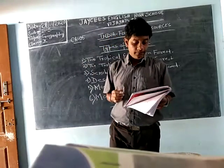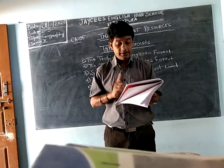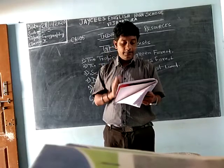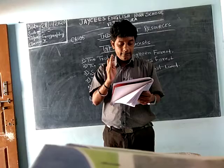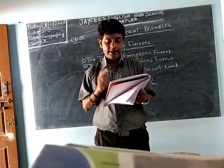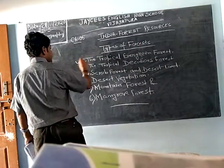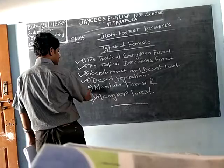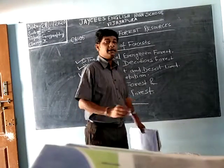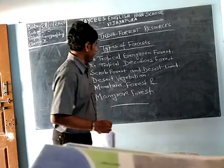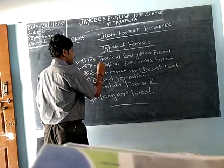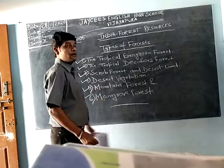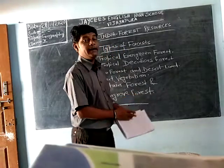Now we'll look at the types of forest. The types of forest depend on climate, soil, and relief — of these, climate is the most important factor. They can be classified into six main types: tropical evergreen forest, tropical deciduous forest, scrub forest and desert land, desert vegetation, mountain forest, and mangrove forest.